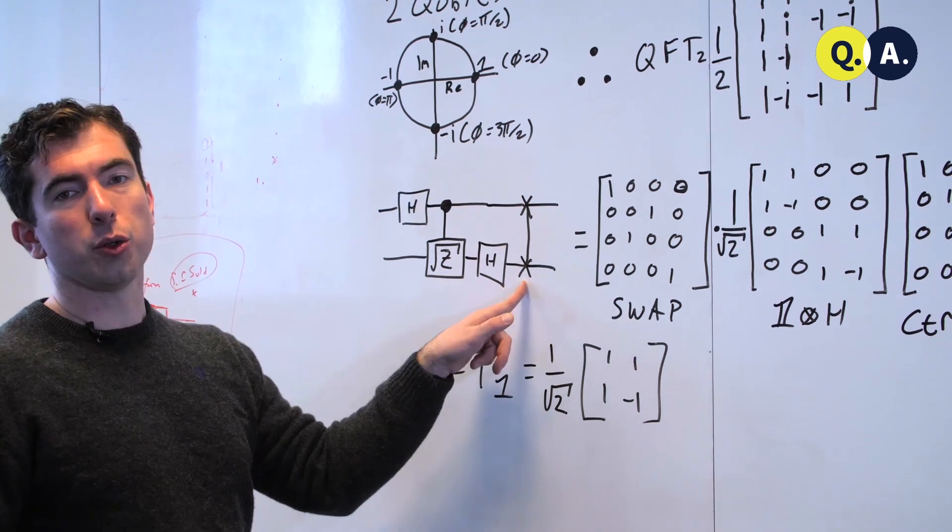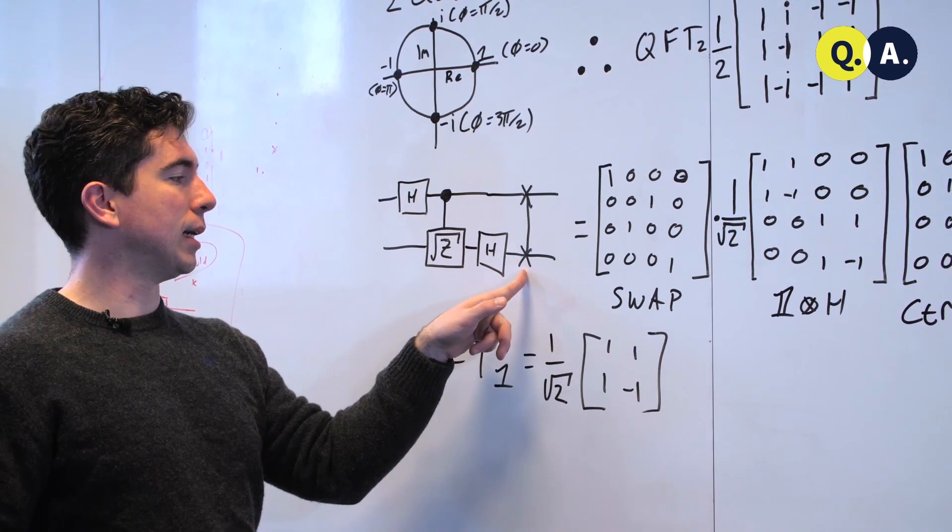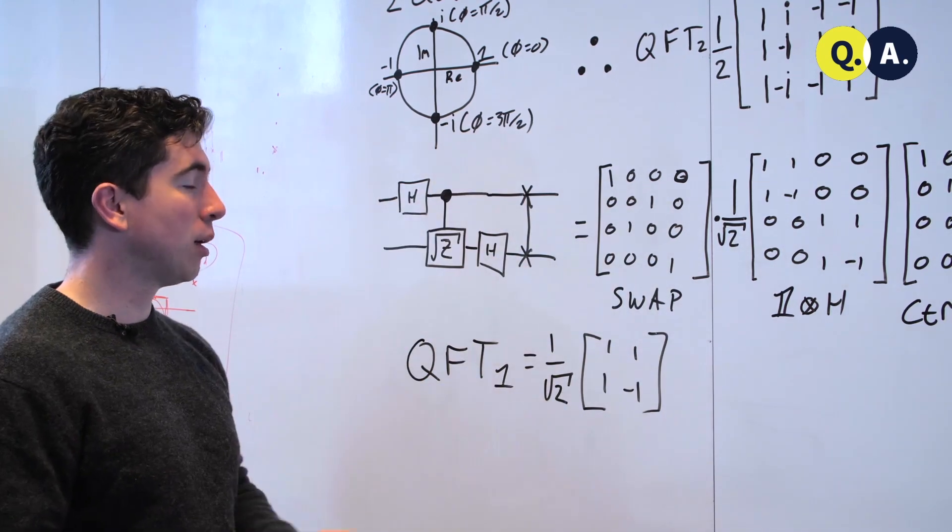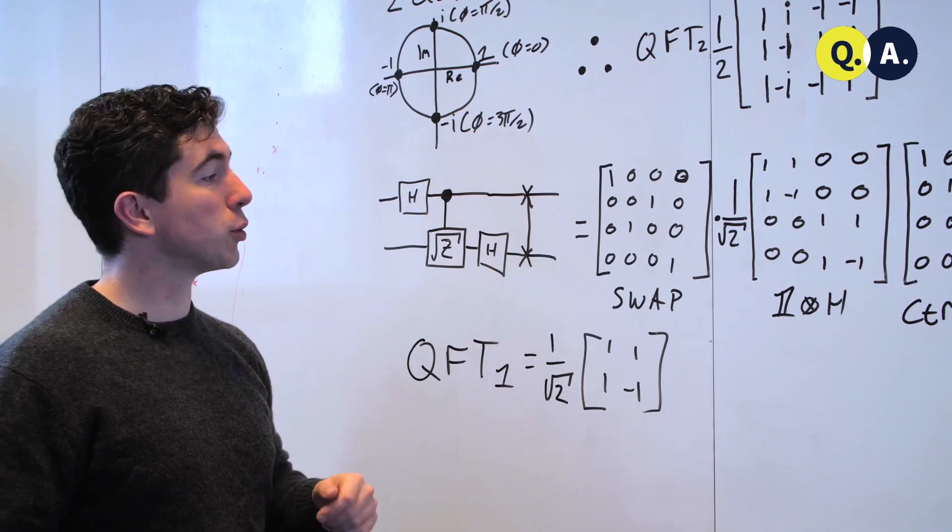because it's often assumed that you can do swap gates like this one classically, just by relabeling which qubits are which at the end. But for the sake of completeness, I included it here.